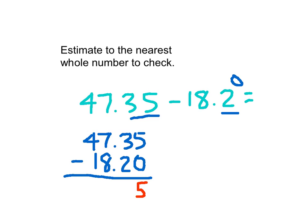So the hundredths places are lined up correctly. 5 minus 0 is 5. 3 minus 2 is 1. 7 minus 8 can't do it, 4 becomes a 3, 7 becomes 17, 17 minus 8 is 9. And 3 minus 1 is 2. So that there is my exact answer.